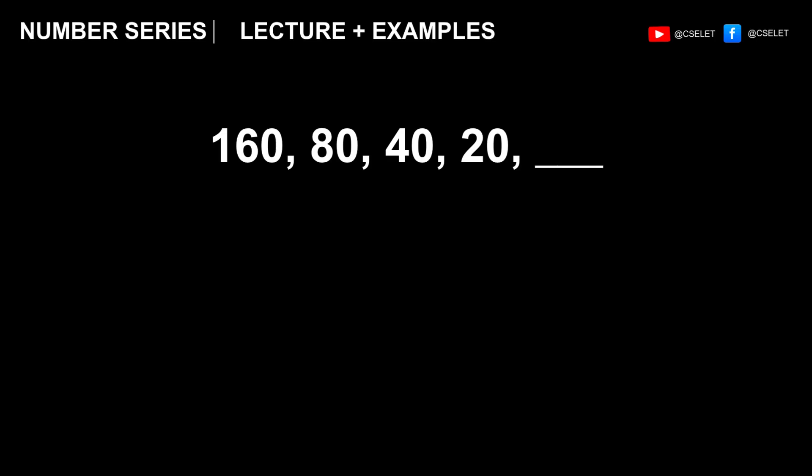Let's try another one. Here, the numbers are descending. So let's do division. 160 divided by 2 is 80. 80 divided by 2 is 40. 40 divided by 2 is 20. And 20 divided by 2 is 10. 10 is the correct answer.